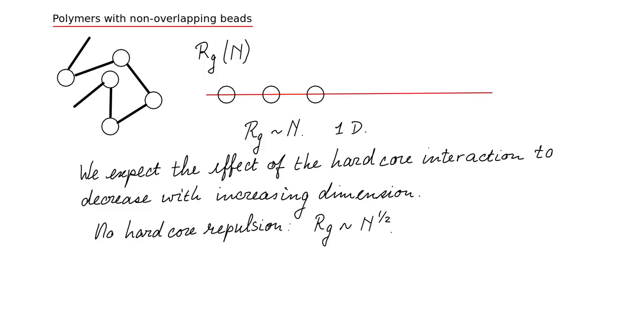What we want to find out is whether in 1d, 2d, 3d etc., whether we find still the same result or whether perhaps the exponent changes. There could be a pre-factor before the n which changes when you switch on the hard core repulsion. The other effect could be that this exponent changes. So let's start the calculation.